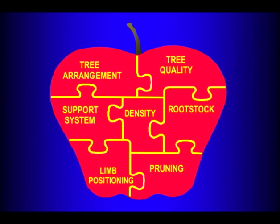Looking at these components of an orchard system helps you to design one. Most of you have seen this puzzle and understand what the pieces are, but there are a couple that perhaps are not so clear. We all know rootstock, density, and support system. Tree quality refers to the caliber of the tree, the branching, whether it's a generative or vegetative tree from the nursery. Tree arrangement is basically how the trees are in the orchard — whether they're single rows, double rows, or bed systems. All those pieces of the puzzle, except for the bottom two, are decisions made before you ever plant the orchard, and sometimes those are the most important decisions.